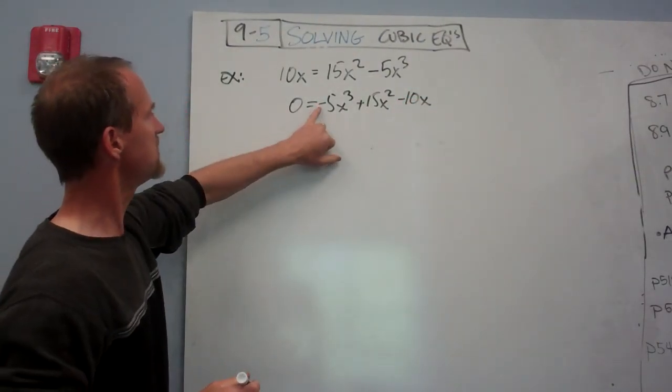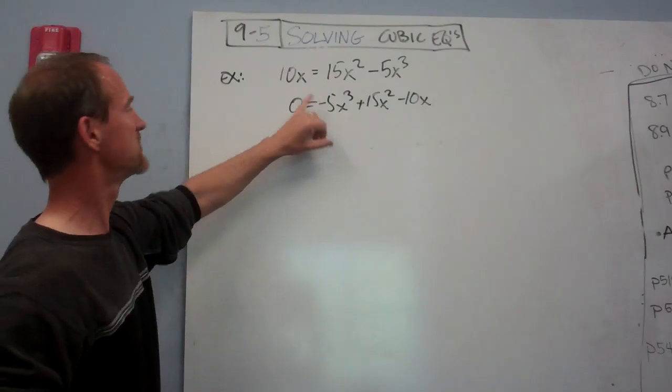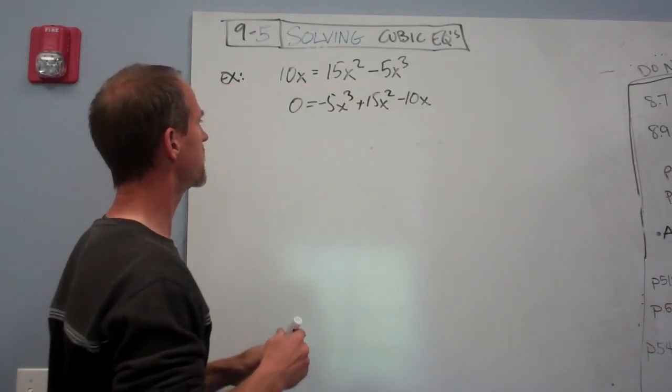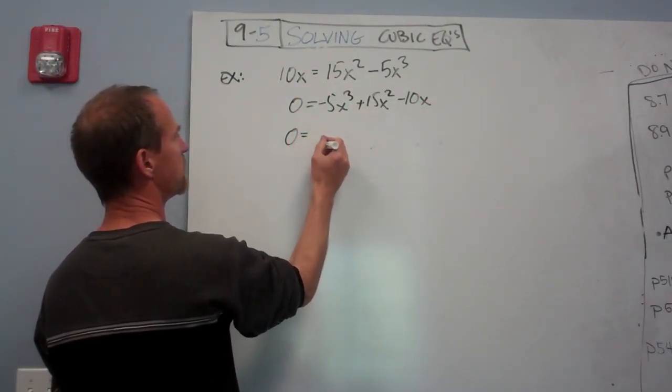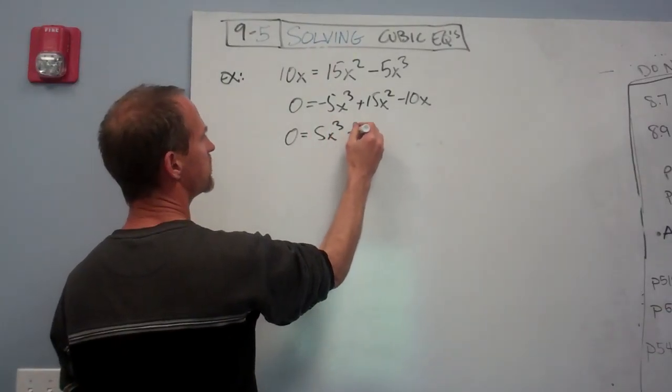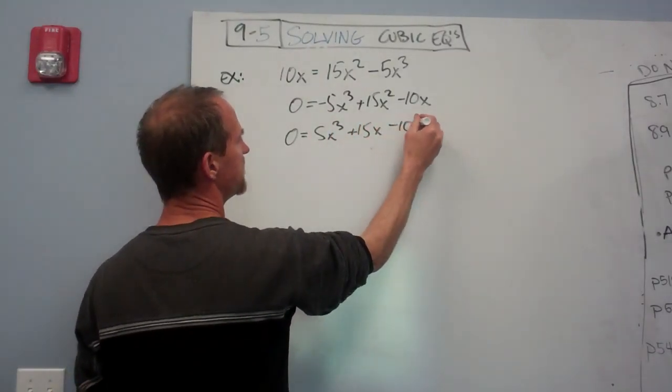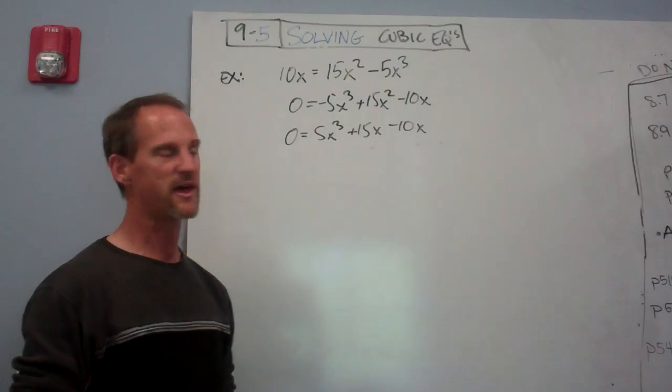Then it's just easier if I work with positives. So if I multiply everything by a negative number, I'll still get 0. There's no such thing as negative 0. Then 5x to the 3rd plus 15x minus 10. I just think it's a good habit to do that.